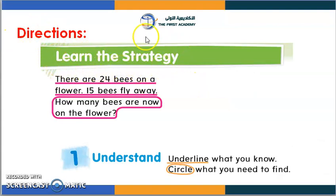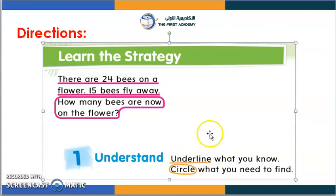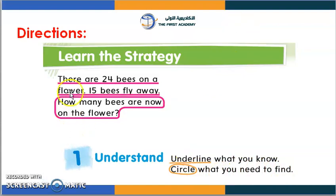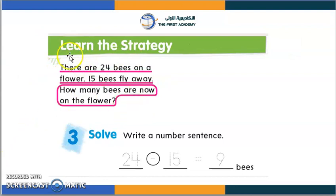Here are our directions and the strategy to learn. Step one is to understand: you need to underline what you know and circle what you need to find. What's underlined is what you already know, and what's circled is what you need to find. Our second step is to plan — how will you solve the problem? Number three is to solve it: you write the number sentence. For example, pick 24, place it, minus, and figure out how many are now on the flower.